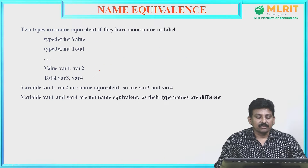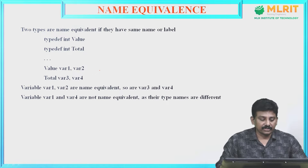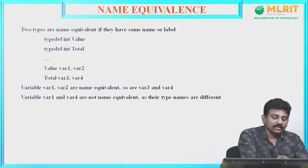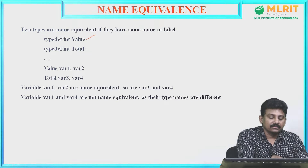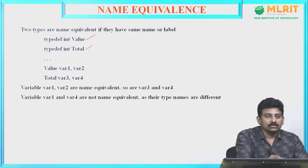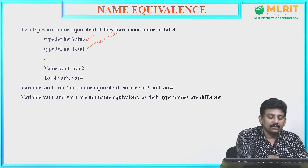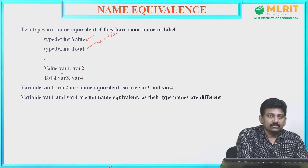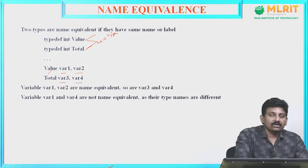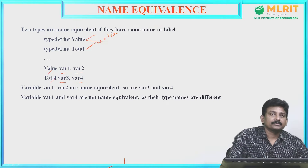Two types are name equivalent if they have the same name or label. For example, typedef int value and typedef int total. Value and total are new types. var1 and var2 are variables of type value, and var3 and var4 are variables of type total.